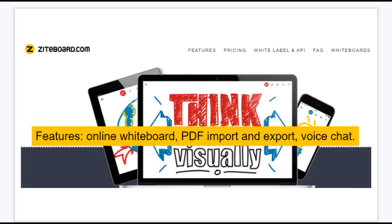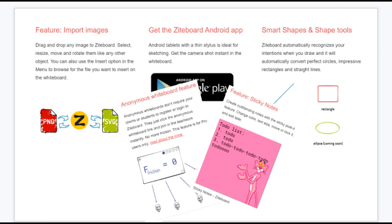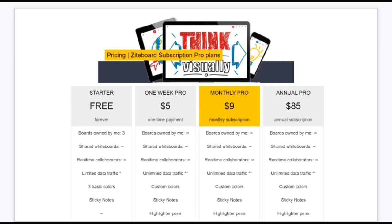Next up, Ziteboard. Ziteboard has a ton of amazing features — it's like a WordPress plugin, which is awesome. It has voice and video chat, and this graphing calculator is amazing. It can do PNGs and SVGs. It's anonymous — people can log in anonymously and complete the board, which is nice for students when they're feeling a little shy and don't want others to know who they are. It also has sticky notes, but when I tried it out, I could not get the post-it notes to move around. Once they were stuck, they were stuck — it was more like permanent cement. I didn't like that part, but some of these features are pretty amazing. They do have a really good free version, so that's definitely an option.